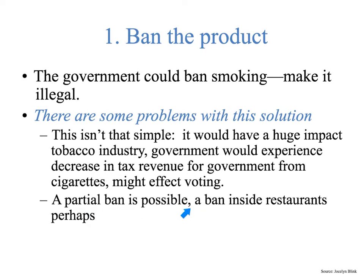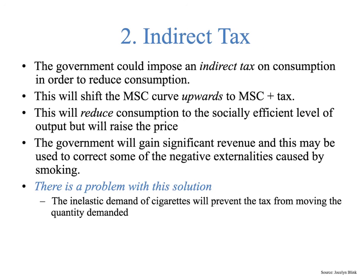A partial ban is possible — an example would be a ban on smoking inside restaurants, which is why you see people standing outside on the street smoking. Another option is an indirect tax on cigarettes. The government could impose an indirect tax on consumption in order to reduce consumption, which will shift the marginal social cost curve upwards to a level of MSC plus tax. This would reduce consumption to the socially efficient level of output but raise the price, and the government will gain significant revenue that may be used to correct some of the negative externalities caused by smoking.